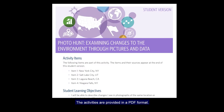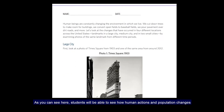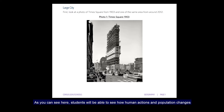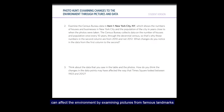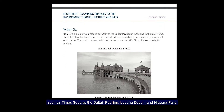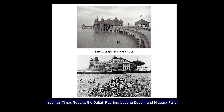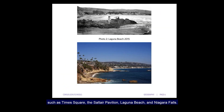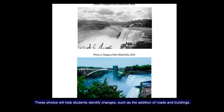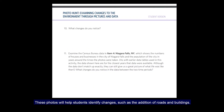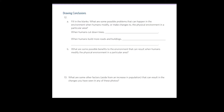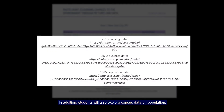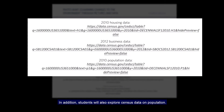To get started, just click the download buttons for the teacher's guide and the student version. The activities are provided in PDF format. As you can see here, students will be able to see how human actions and population changes can affect the environment by examining pictures from famous landmarks such as Times Square, the Salt Air Pavilion, Laguna Beach, and Niagara Falls. These photos will help students identify changes such as the addition of roads and buildings, and students will also explore census data on population.